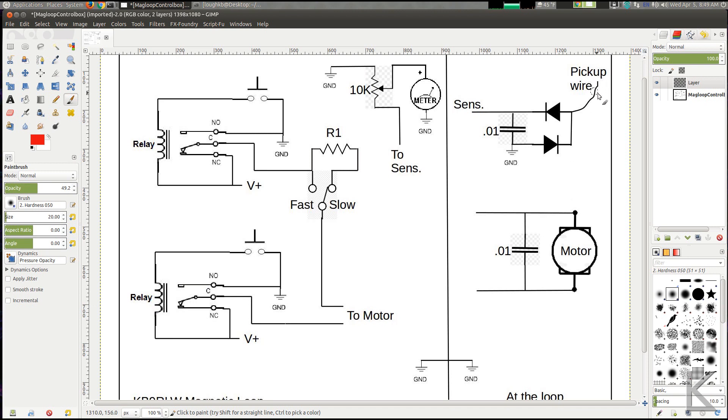This is that pickup wire that I mentioned that's near the loop. You want it about an inch or two away from the loop. And it's very short. It's about an inch. It doesn't take much because there's a lot of RF present when that loop is operating. And here's our diodes. And you can see that we have a full wave rectification going on here.